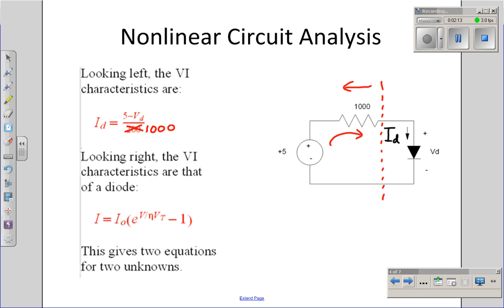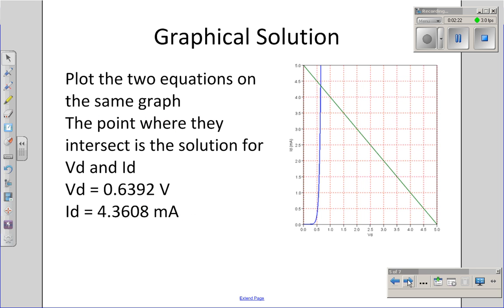Looking right, however, I know the current voltage relationship is defined by the diode, the nonlinear exponential equation. It gives me two equations to solve for two unknowns, which in theory you can do.